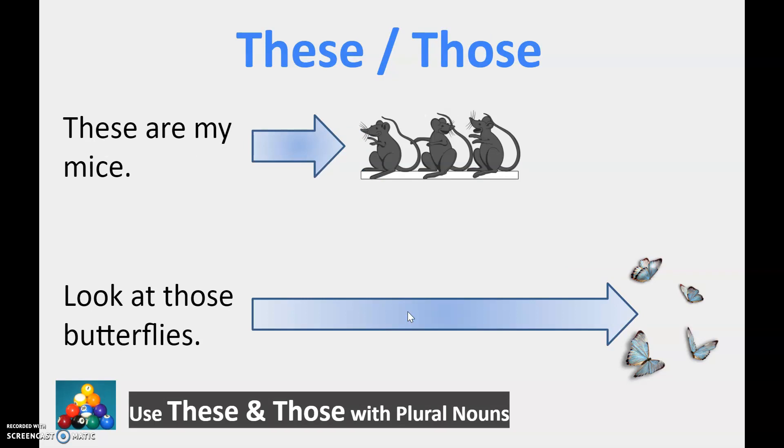These and those we use with plural nouns. So when we have many more than one. So these are my mice. Look at those butterflies. So these when it's close and those when it's further away.